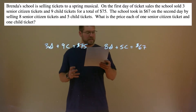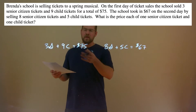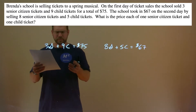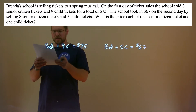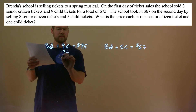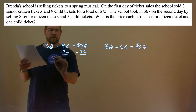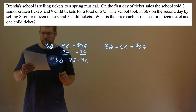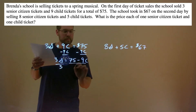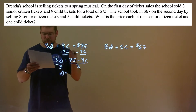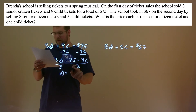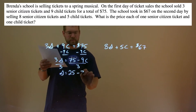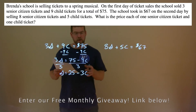Now we have to find the price of each one. We have our equations and we need to solve for one of our variables first. I'm going to subtract 9C from both sides and try to get S by itself. So I have 3S equals 75 minus 9C. Divide both sides by 3, and S is by itself. 75 divided by 3 is 25, and 9 divided by 3 is 3. So S can be written in the form of 25 minus 3C.